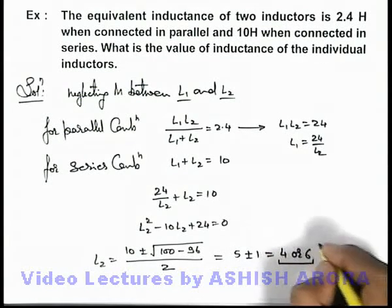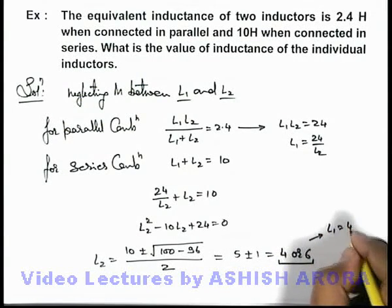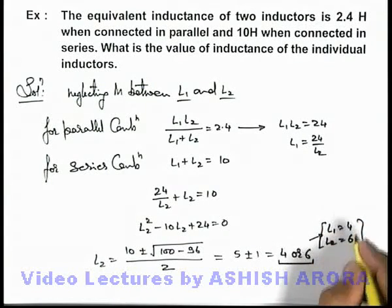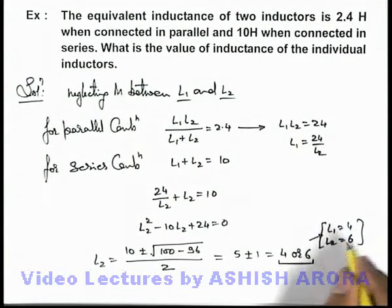So directly we can write here the value of L1 could be 4 or the value of L2 could be 6. Value of L1 could be 4 and value of L2 could be 6, or vice versa. So that will be the answer to this problem.